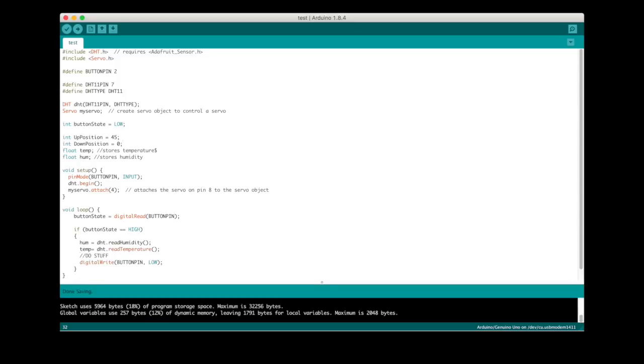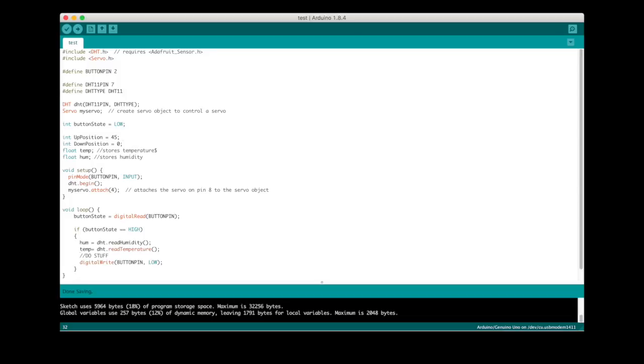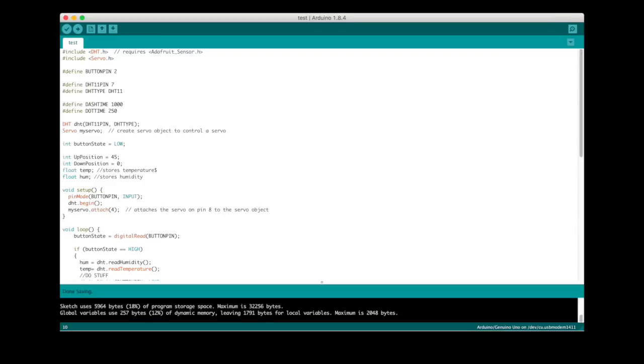Now we need to fill the do stuff section with actual instructions. Since we want to have Morse code, we'll have to define dot, dash, and space functions. Looking at the dot function here, we see it has the servo arm lower to the down position to have the marker make contact with the writing surface. It waits there long enough to draw a dot and then comes back up. And we define how long that is here in lines 9 and 10 in the units in milliseconds.